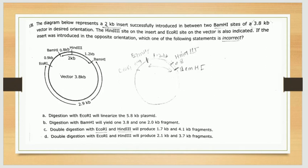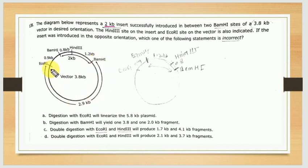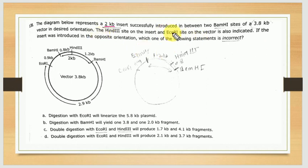The next question from the CSIR 2014 paper is question number 138. The question states that the diagram below represents a 2 kb insert successfully introduced between the BAM H1 site. The vector size is 3.8 kb, with a 0.9 kb segment between ECO-R1 and BAM H1, and a 2.9 kb segment on the other side. This part represents your insert.